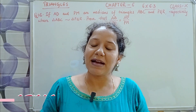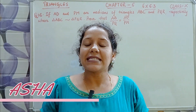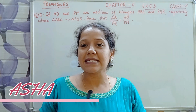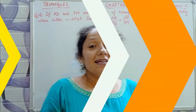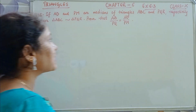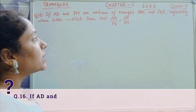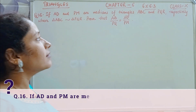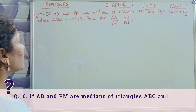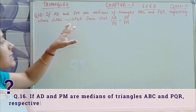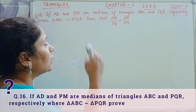Hello students and welcome back to my channel. Today we will start question number 16 of exercise 6.3. The question states: if AD and PM are medians of triangles ABC and PQR respectively, where triangle ABC is similar to triangle PQR.